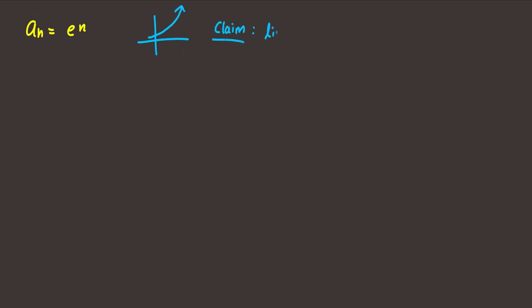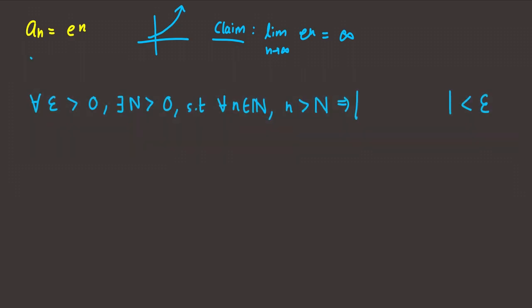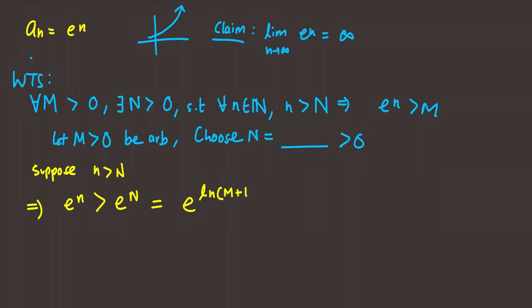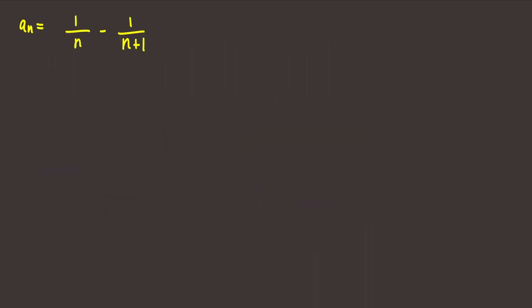This example combines what we did in the last few. e^n is exponential so it goes to infinity, and we prove divergence by showing e^n is greater than M. We let M be arbitrary and choose N, suppose the antecedent, and since e^n is greater than e^N we get M by picking N = ln(M) + 1, then minimizing.